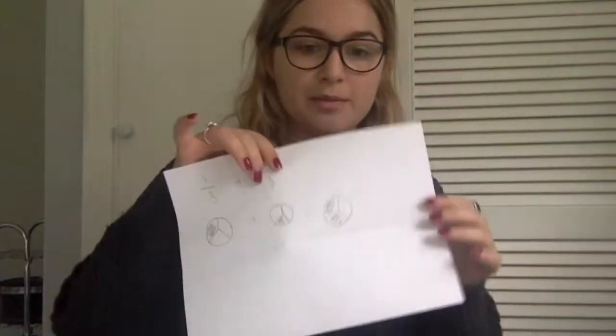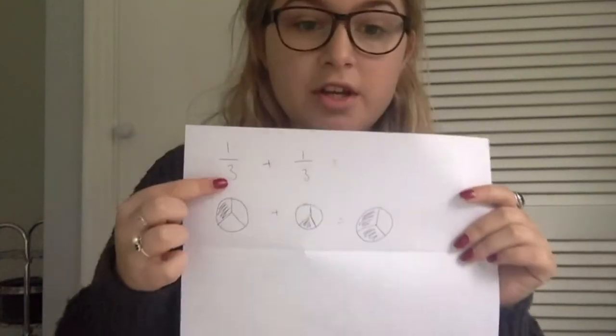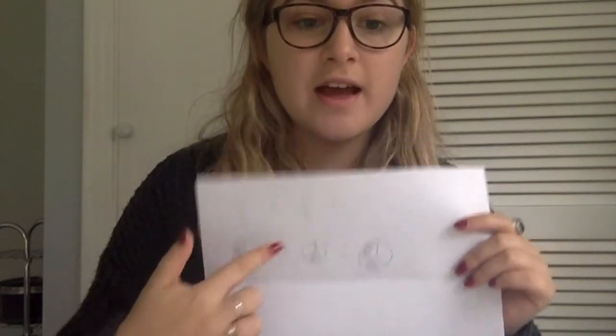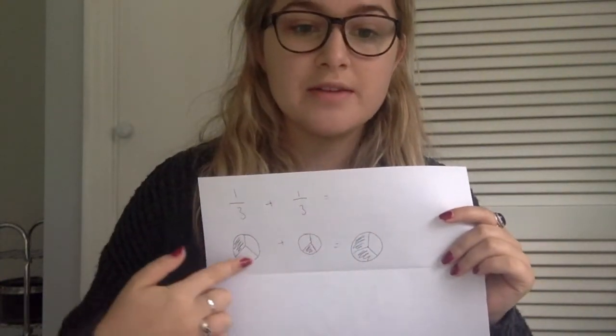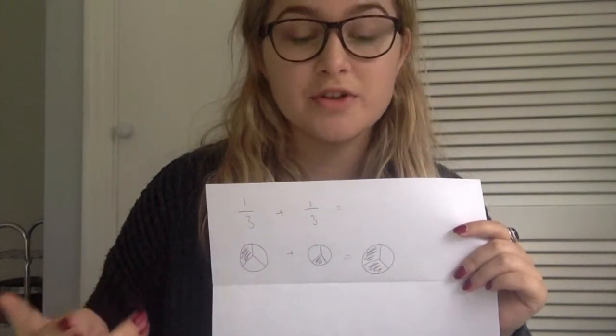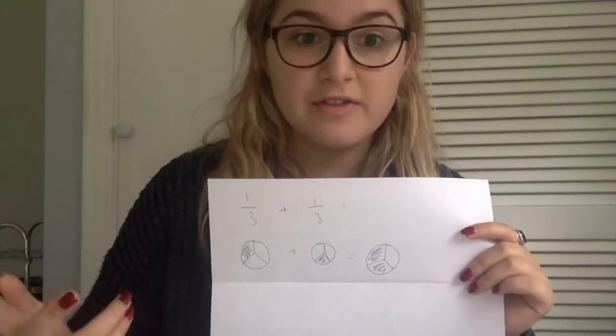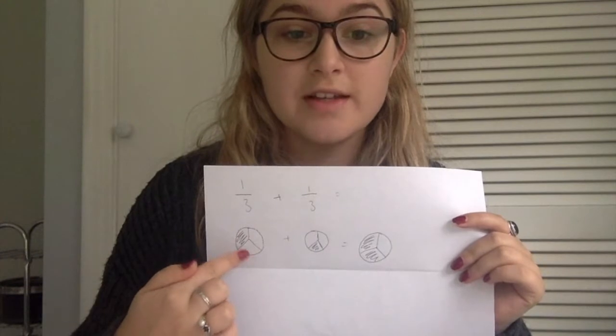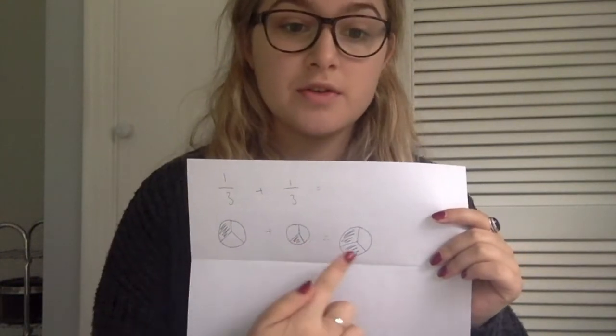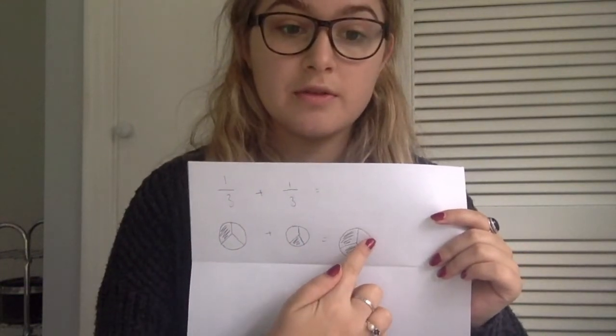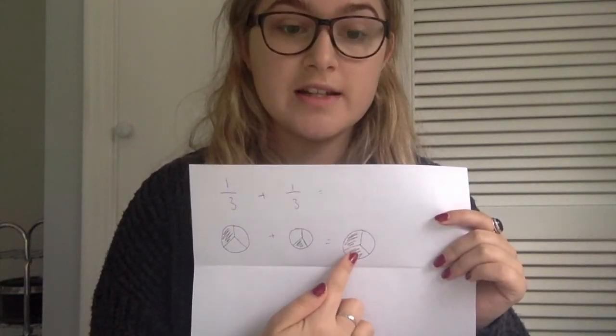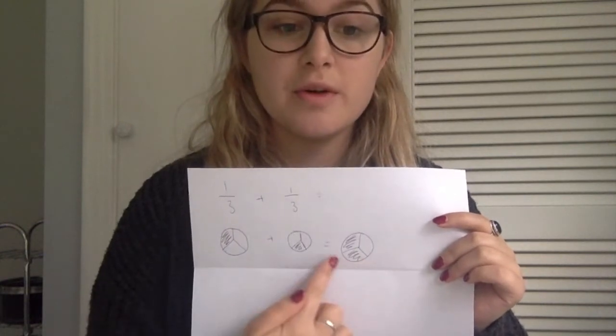Then I would give the children some examples where the denominator is the same. For example, if we're adding one-third and one-third, I would have an example like this on the board. So one-third plus one-third — I've drawn a little diagram at the bottom, which helps a lot of children, especially visual learners. We've got one-third here and one-third here, and two are coloured in, so this means two-thirds.